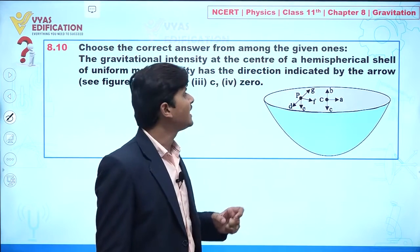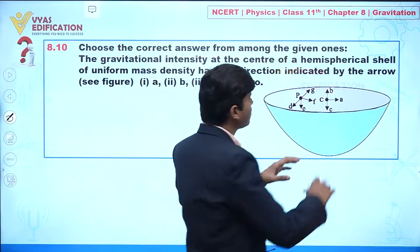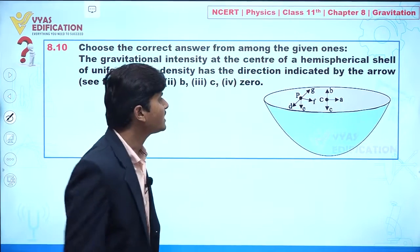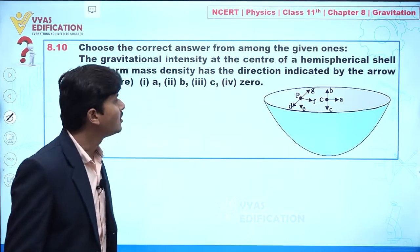So let's suppose we have this hemisphere, and we can say C is denoting the center of the same sphere. Now if I am talking about that direction, exactly what will be the direction of gravitational intensity?